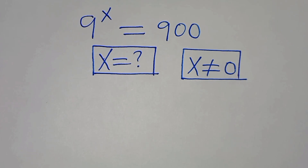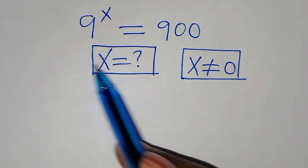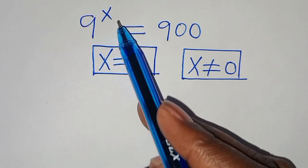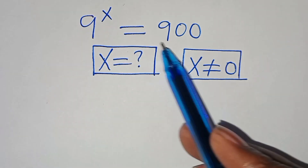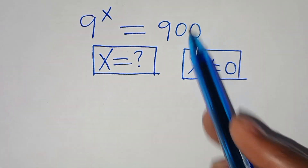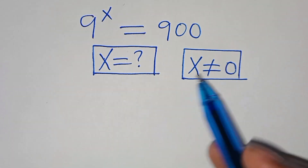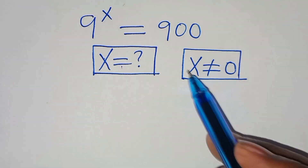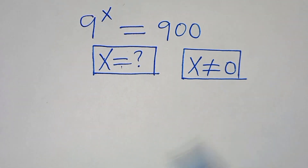Hello everyone, you are welcome to solve this nice exponential equation, which is 9 to the power of x, this is equal to 900. What is the value of x, given that x is not equal to 0?